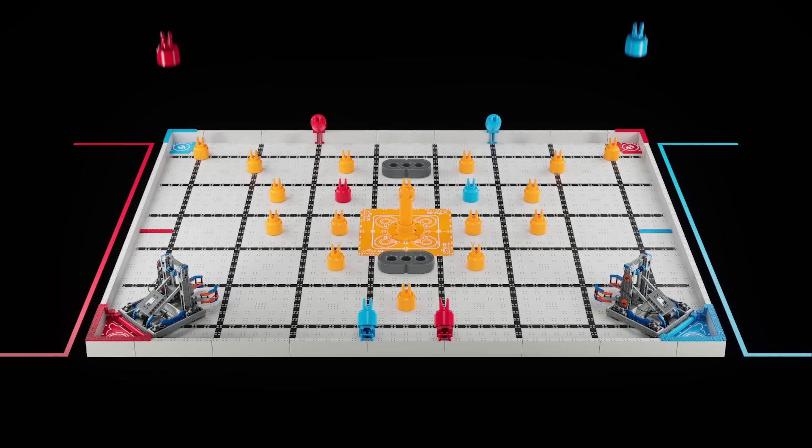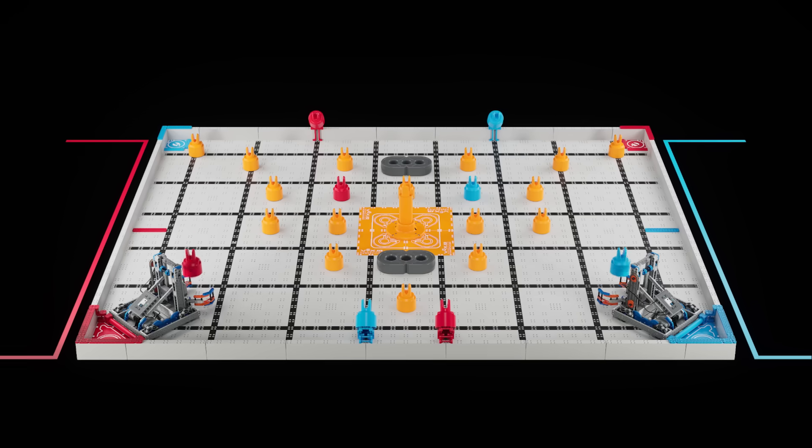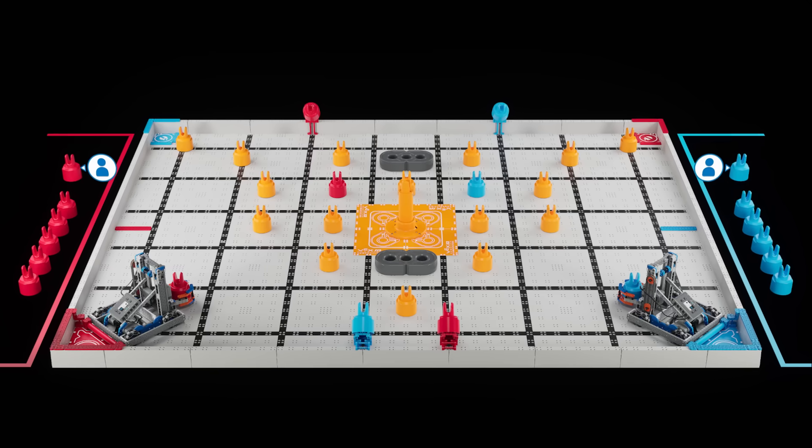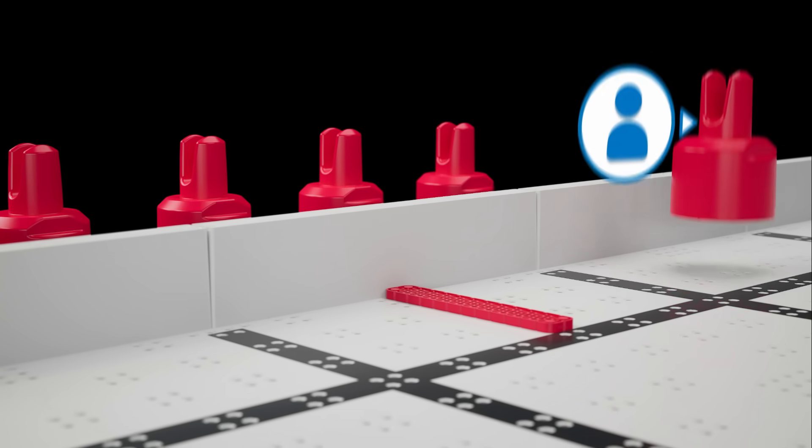Each robot must begin the match with one pin of their color as a preload. 12 pins are reserved for human loaders and can only be introduced by contacting a load zone of the same color.